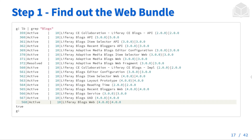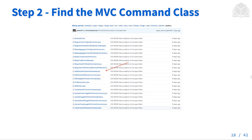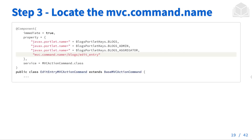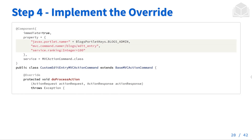For step one, we want to find the web bundle we'll be overriding — in this case the Liferay blogs web portlet, which is bundle number 568 inside our Gogo shell. In step two, we find the MVC command class, which is EditEntryMVCActionCommand.java. In step three, we locate the MVC command name: mvc_command_name equals /blogs/edit_entry. In step four, we implement the override by creating a component with that same portlet name and MVC command name, and setting the service ranking to 100, which makes it higher than the previous service ranking.